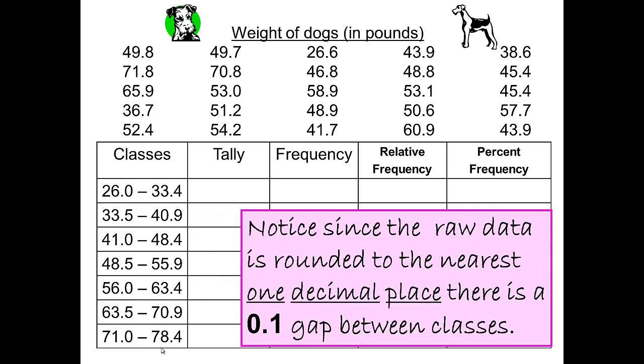Notice since the raw data is rounded to the nearest one decimal place, not the one whole number, but one decimal place, there is a 0.1 gap between the classes.